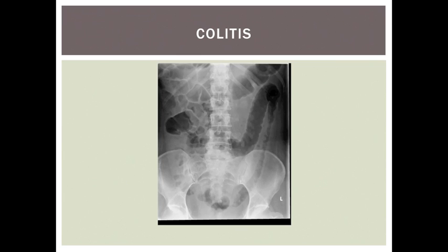The changes seen in colitis are the same for both infective and inflammatory causes of colitis. In this x-ray you can see thickening of the left colon. You can see a thick white line running along the side of the bowel lumen, and this is oedema in the colonic wall. You can see that this continues into the transverse colon, which has dipped down into the middle of the abdomen.